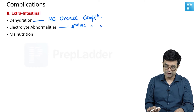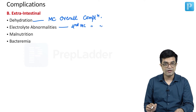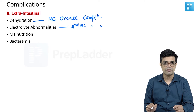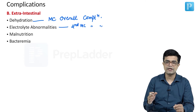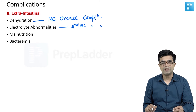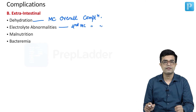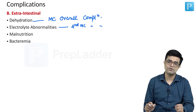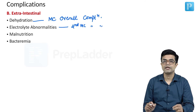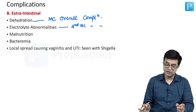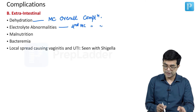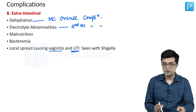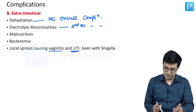Then we have malnutrition and bacteremias. Bacteremias are typically produced by non-typhoidal Salmonella. Bacteremia can lead to seeding of the pathogen in various other systems, causing localized manifestations like meningitis, pneumonia, osteomyelitis, etc. Local spread can cause vaginitis and UTI, and only one pathogen produces this — Shigella.